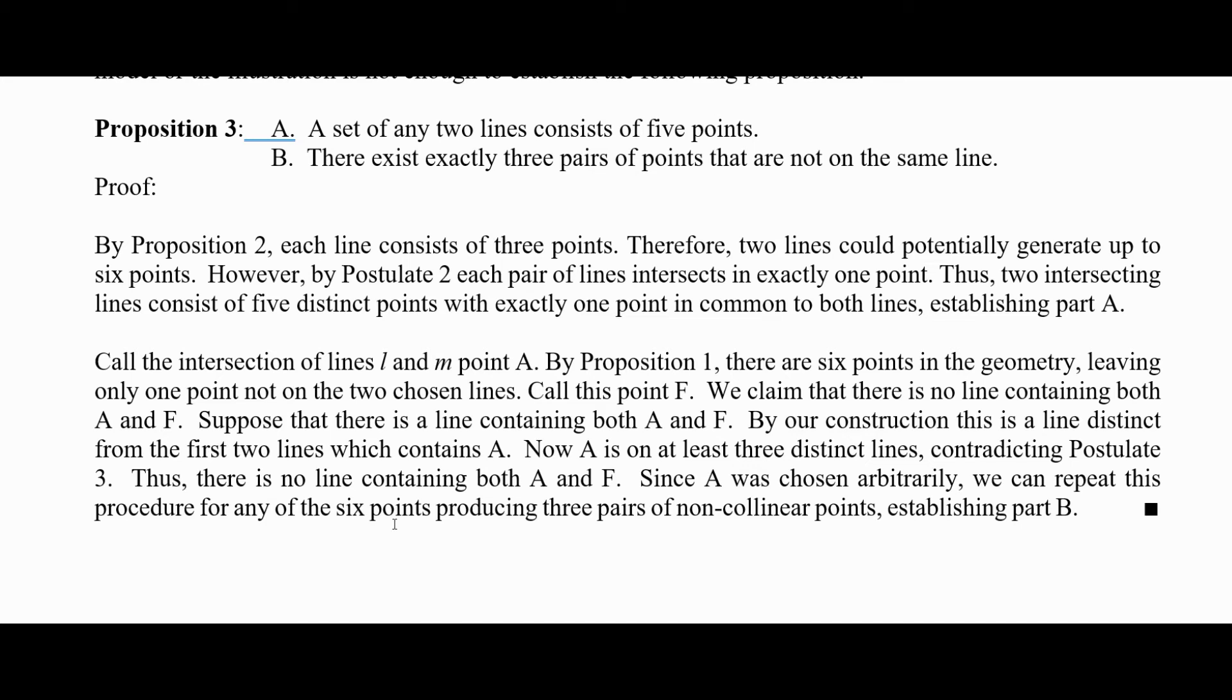Call the intersection of two lines L and M point A. By proposition one, there are six points in the geometry, leaving only one point not on the chosen lines. Call this point F. We claim that there is no line containing both A and F. By our construction, this is a line distinct from the first two lines that contains A, but now A is on at least three distinct lines, and that contradicts postulate three. Thus, there's no line containing both A and F. Since A was chosen arbitrarily, we can repeat this procedure for any of the six points producing three pairs of non-collinear points, and that establishes part B.